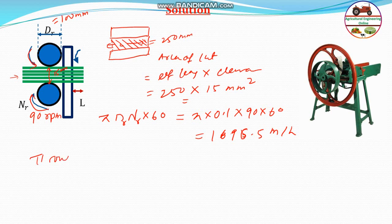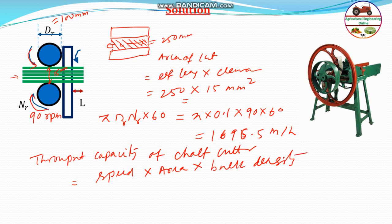Therefore, the throughput capacity of chaff cutter will be equal to speed, very simple. You remember this: speed into area into bulk density. Area means the area of cut, bulk density of the chaff you have to multiply.